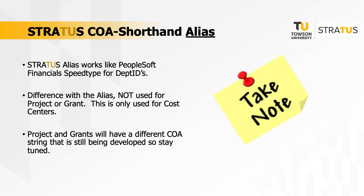If you compare the alias to today's PeopleSoft financial system, this works the same way as SpeedType, which defaults in the correct chart of accounts string as well. The difference with the alias, however, is that unlike SpeedType, this is not used for transactions being posted into a project or a grant. This is only used for cost centers.